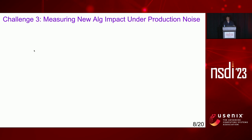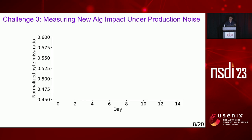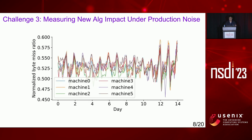However, in practice, the behavior of machines is never identical. Machines on the same rack have different behavior because of imperfect load balancing. This figure shows byte miss ratio over time for six machines on a rack. There can be at most 10% difference in byte miss ratios across machines, and this makes it hard to accurately measure the production impact of a new algorithm.